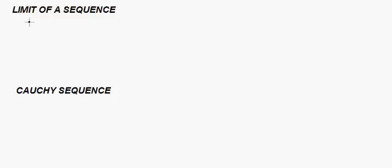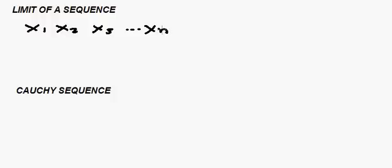Let's start with the limit of a sequence. A sequence is a set of numbers like X₁, X₂, X₃, all the way to Xₙ, and we talk about converging to a point or having a limit X. Let's say that we have a point and X is the limit of this sequence — so what do we mean by this?